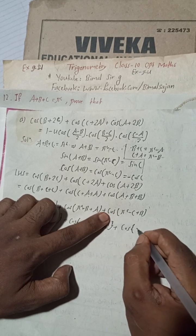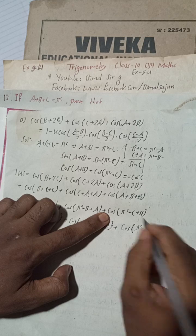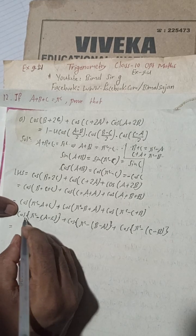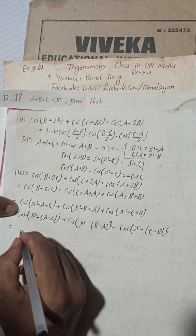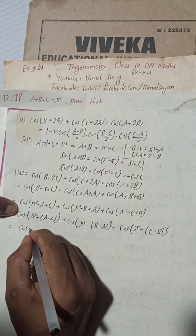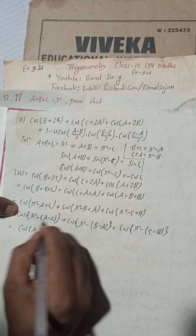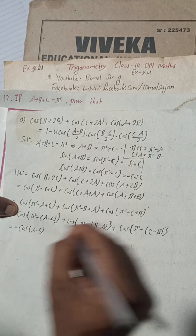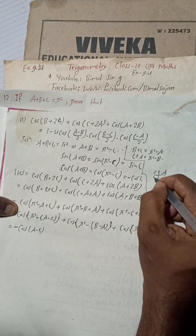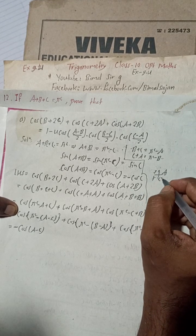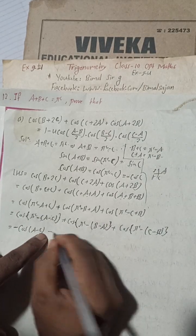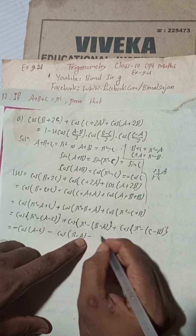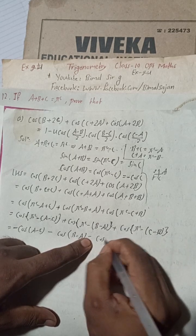For cos(π − x), since it's in the second quadrant, this equals −cos(x). So we get: −cos(a − c) − cos(b − a) − cos(c − b). Taking −1 common: −[cos(a−c) + cos(b−a) + cos(c−b)].